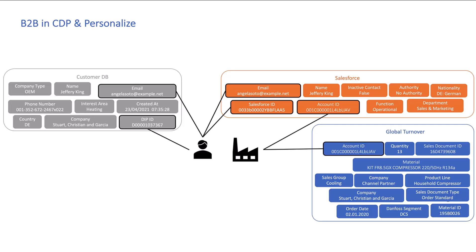To start off, I'm going to talk about the identity rules that were set up in the platform. Everything shown here in black was set up as an identity rule — so there was email, the DIP ID, Salesforce, and the account ID. I did this to showcase how we can use a number of different identifiers, and it means we can query for customers using any of these identifiers via our APIs, which makes it much easier.